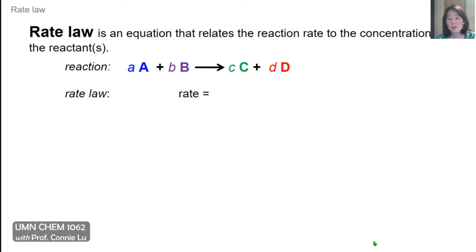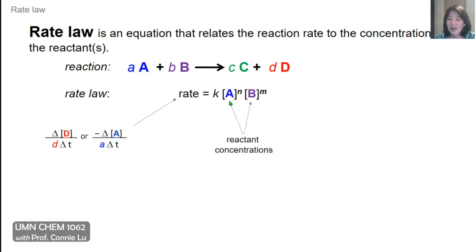You can also write a rate law for more complex reactions. For a reaction where reactants A and B form products C and D, with stoichiometric coefficients a, b, c, and d, the rate law has rate on the left-hand side and on the right-hand side the concentrations of both reactants A and B multiplied together, each raised to their own powers N and M. The reaction rate can be written in terms of either reactant or product, accounting for stoichiometric coefficients.